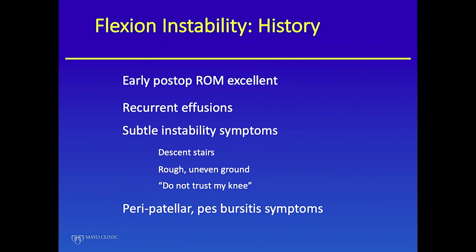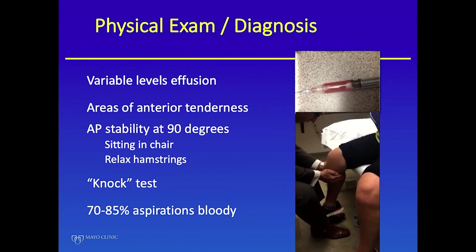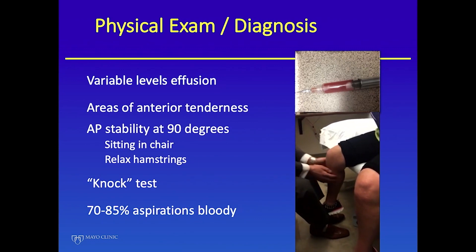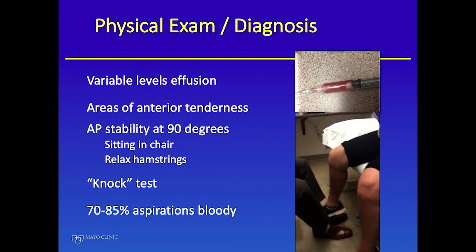This is Matt doing the examination. The patient is on the table with their foot on the floor, supporting the leg to relax the quadriceps, showing how to examine the patient. The knock test involves reaching up underneath the thigh and letting the tibia dangle so you can feel the bouncing from side to side.